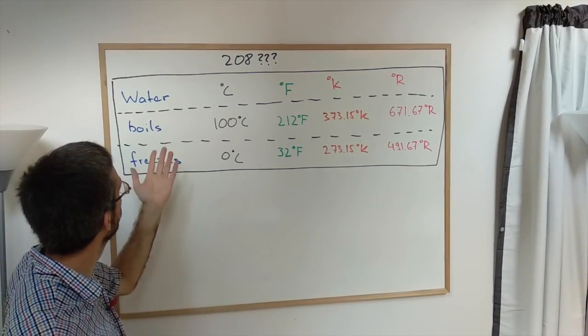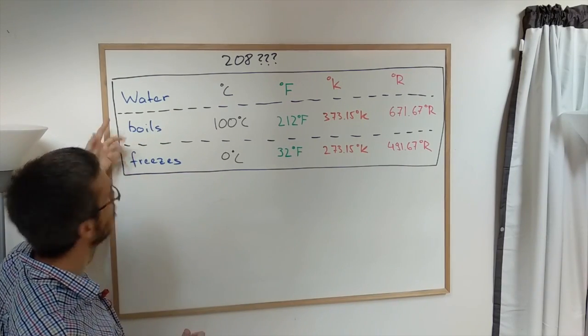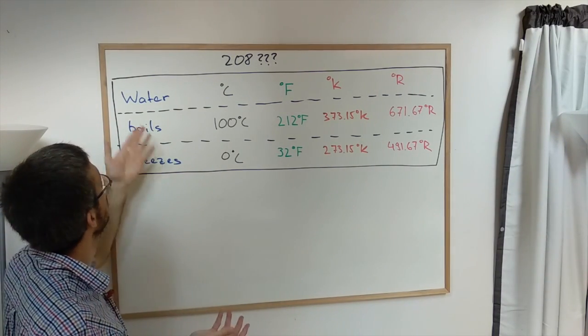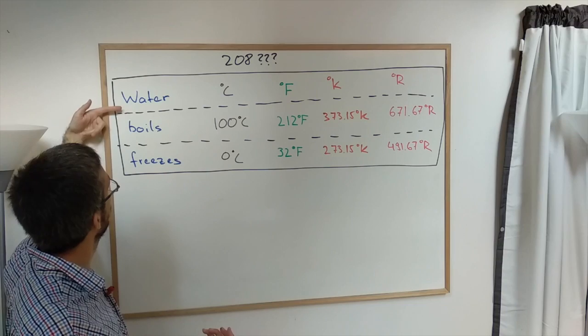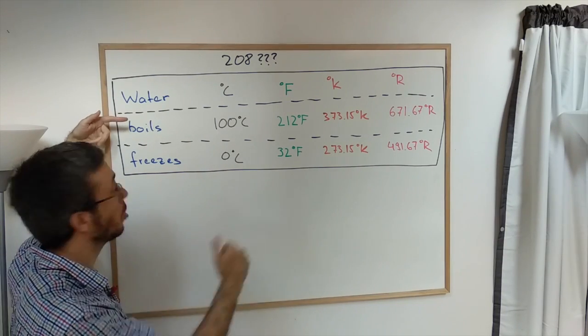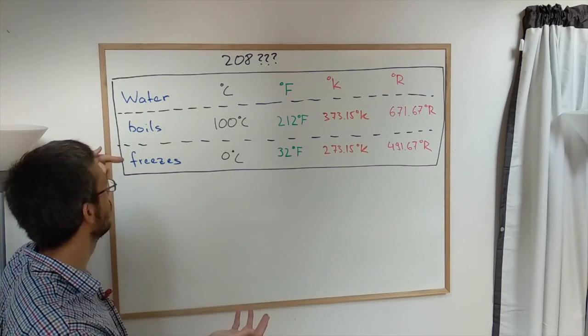Let's look at these temperature scales to think about what it can be. As we have a water heater, let's look at the properties of water in all of these temperature scales. When does it boil and when does it freeze?